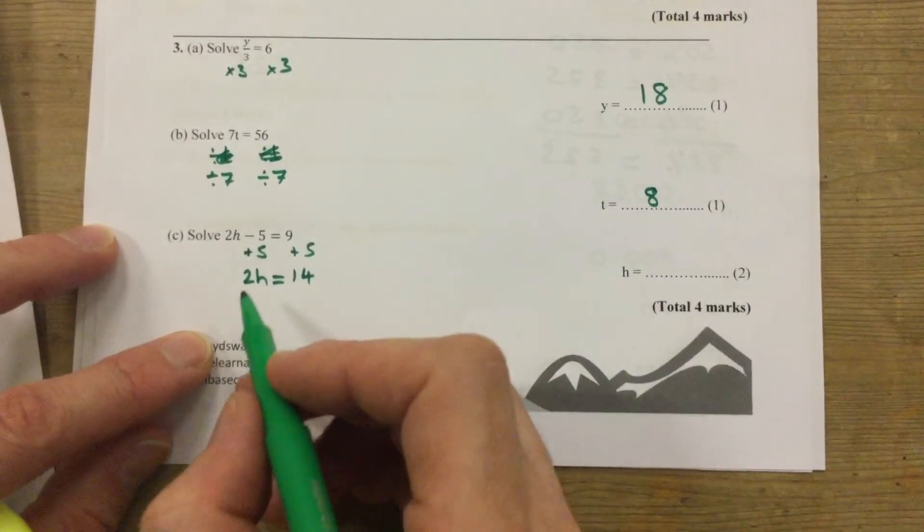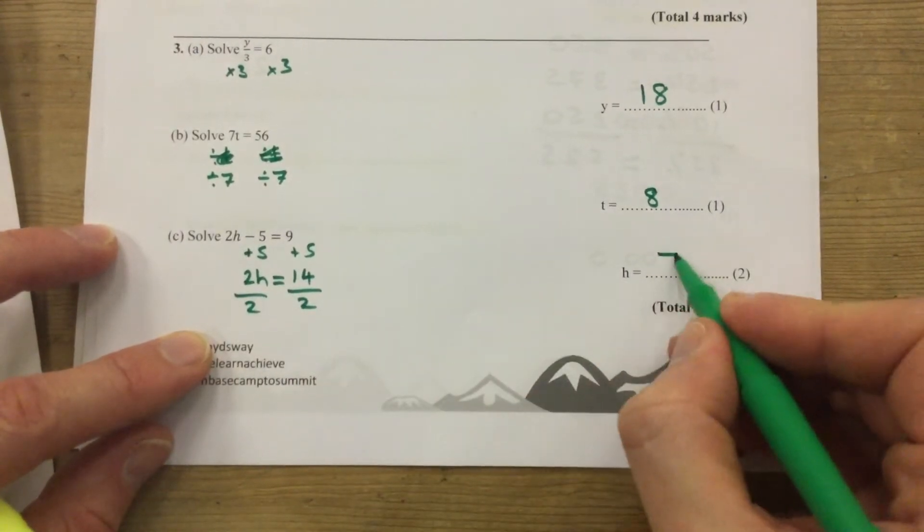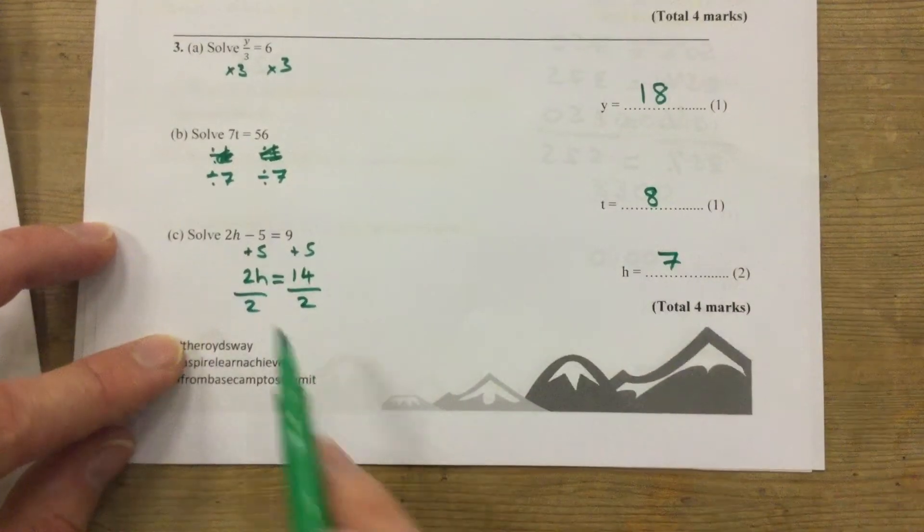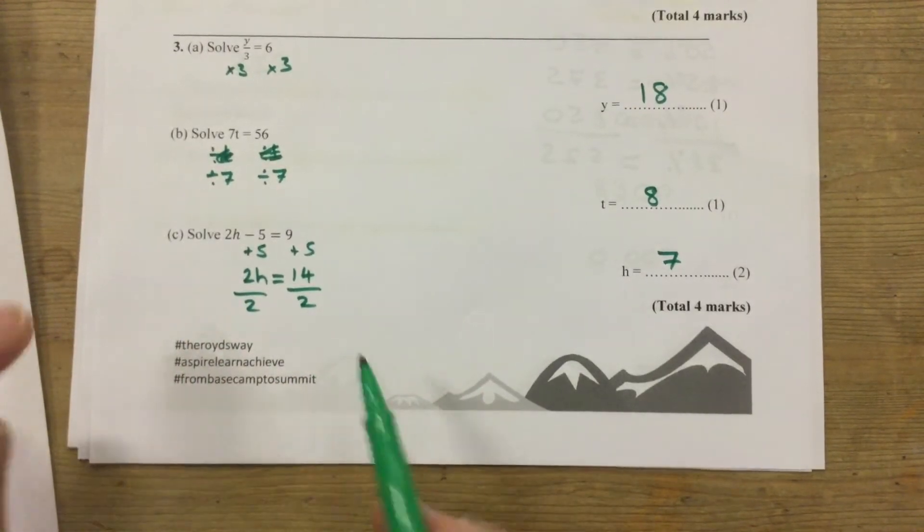Now the inverse of times by 2 is divide by 2. 14 divided by 2 is 7. I could have divided everything by 2 first, but it would have left me with fractions to work with - notoriously more difficult.